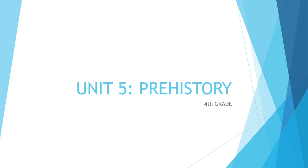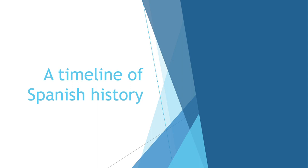Hello everyone! Today we are going to continue explaining unit number 5, Prehistory. In this video, we are going to see the second part of the timeline of Spanish history, related to history. This period began around 3200 BC and continues presently. It's divided into different periods that we will see now.